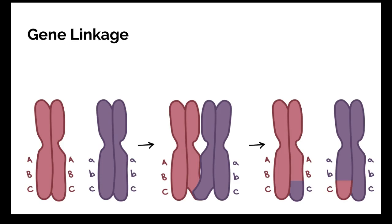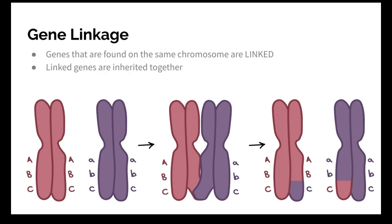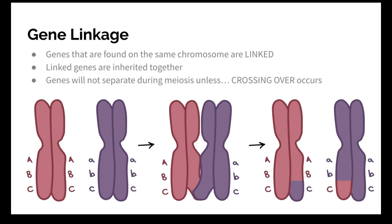First we're talking about how genes are actually linked together. If they're linked, that means that they're going to be inherited together — unless crossing over happens. So if they're found on the same chromosome we say that they're linked together, which means they're going to be inherited together and they're going to end up in the same cells. But if they cross over they will end up in different cells, and if they're linked they will stay together in meiosis.